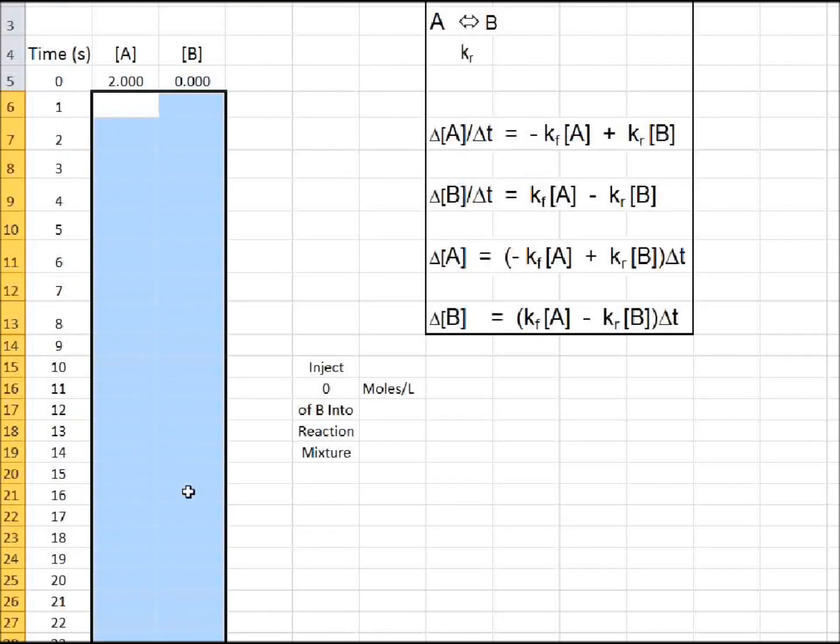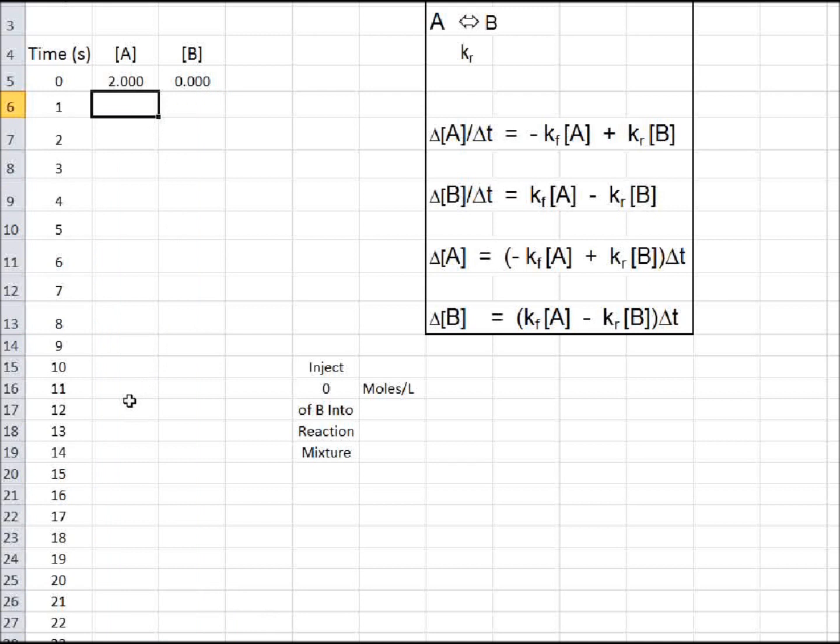Let me delete that. All right, now what will be the concentration of A after one second? I'm going to say equals. It will equal what it was previously, minus Kf, and I'm going to make this cell constant by pressing F4. Kf times the concentration of A plus Kr, and I'm going to make that constant, times the concentration of B.